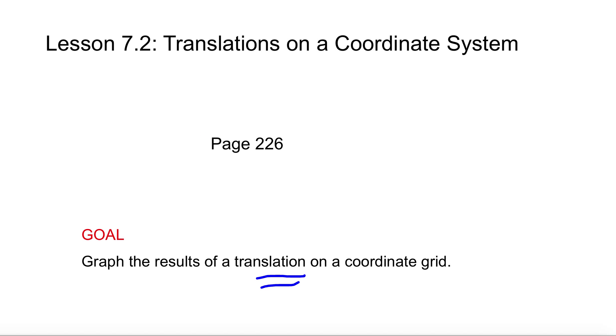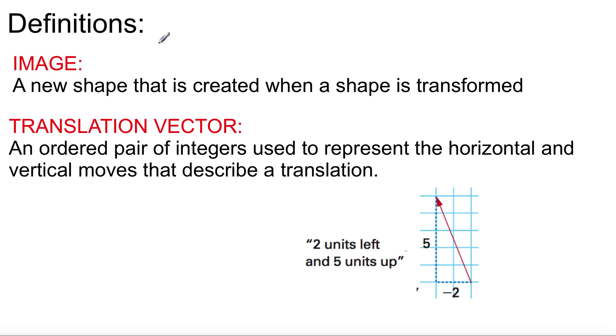All right, so let's go over some definitions here. Get these down. Image: a new shape that is created when a shape is transformed. Unlike Optimus Prime, it stays the same. It just changes location on the grid.